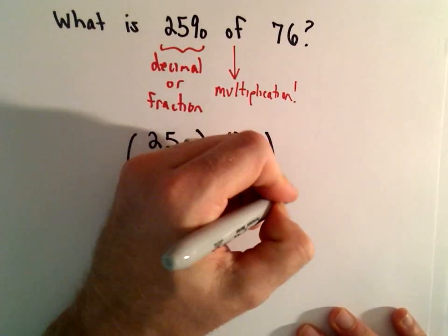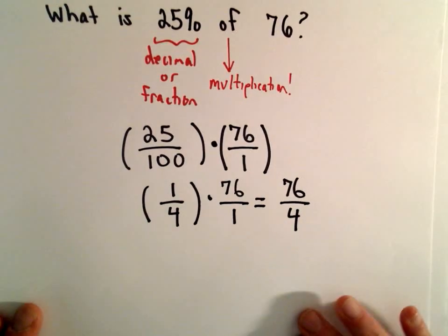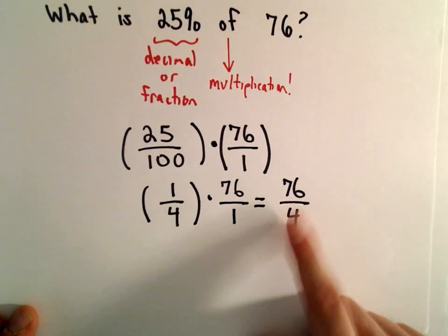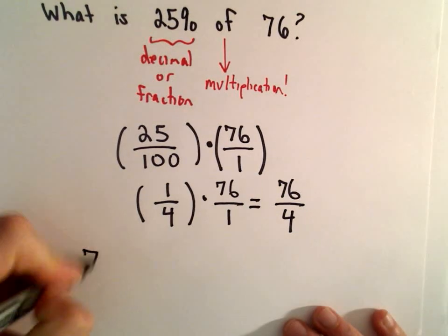Well, that's just going to give us 76 over 4. And 4 will go into 76 evenly.